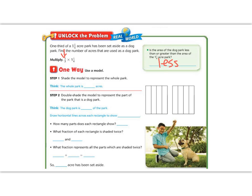Shade the whole model to represent the whole park. So here is one. I'm going to color in this whole thing. I have one whole acre and I have a fourth. Now I'm going to split that. Step 2 says double shade the part that is going to be the park. Well, the park is going to be one third of that. So I'm going to split this into groups of three. And now if I have one, two, three, four times three is 12, 13, 14, 15 colored in pieces.